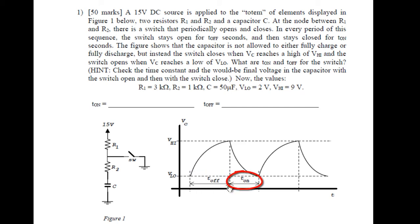and then it stays closed for T-ON seconds. The figure shows that the capacitor is not allowed to fully charge to 15V or completely discharge down to 0V. But instead, the switch closes when Vc reaches a high of V-high, and the switch opens when Vc reaches a low of V-low. What are T-ON and T-OFF for the switch?